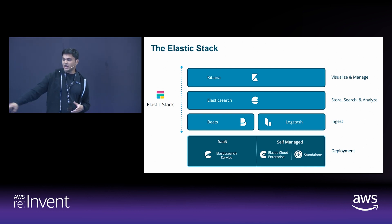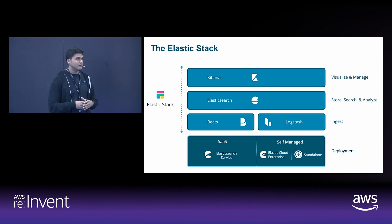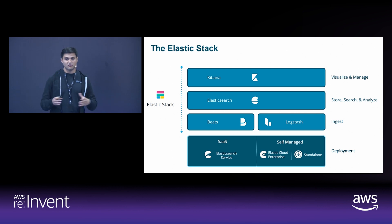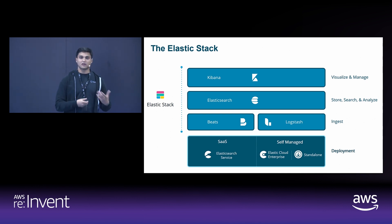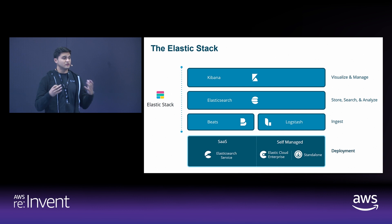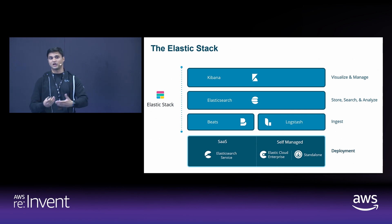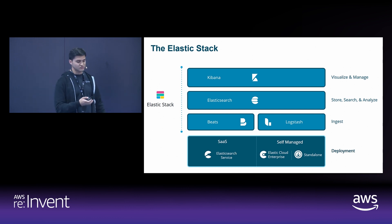On the deployment side, on the left you have the Elasticsearch service — a really quick way to get started, probably the fastest way. We also have what we call Elastic Cloud Enterprise. Our cloud platform is built on top of this really powerful orchestration service, and we offer that to customers who want to offer Elasticsearch as a service to their own end customers.